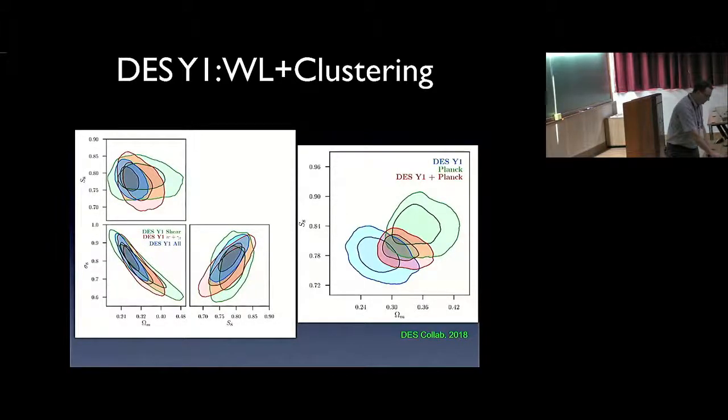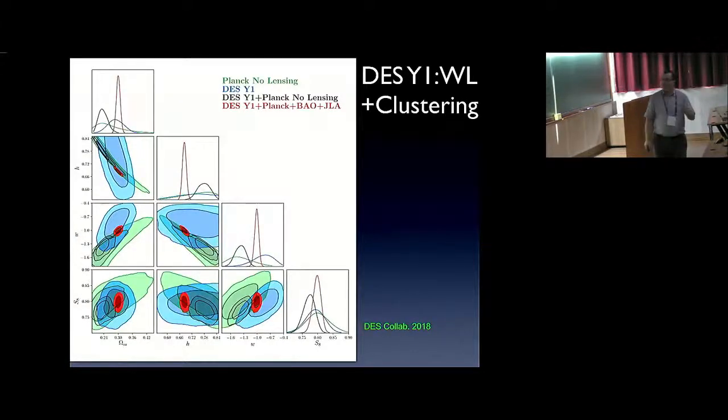Now, as we've done before, we can expand now to a WCDM model. So now we can vary W. Sorry, it's kind of a busy plot, but the one to focus on is this one. This is omega matter versus W, this time now including not only weak lensing, but also clustering. Again, DES is in blue, Planck in green, and then combined together is red, which is, again, consistent with W equals minus one, but now with higher precision.